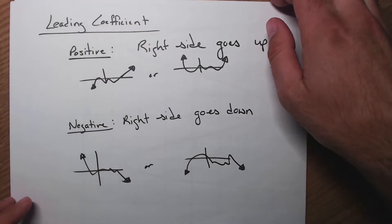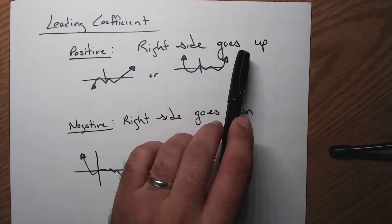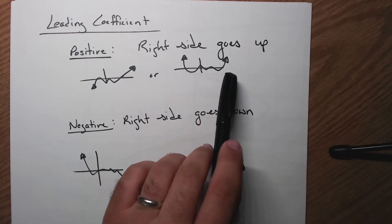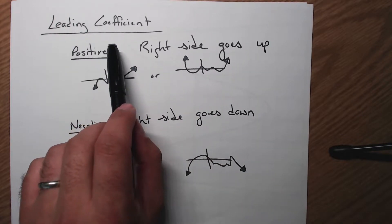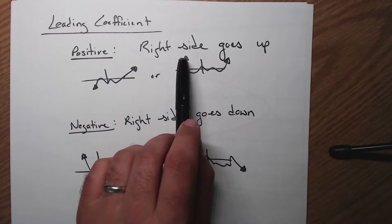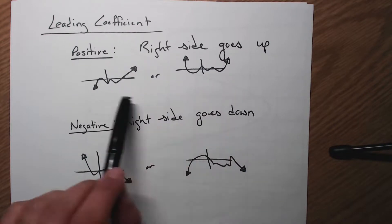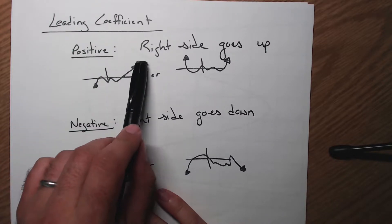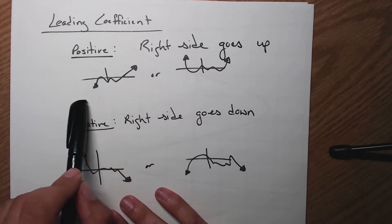The leading coefficient gives more specific direction. If it's a positive number, our right side is going to go up no matter what. If it's an even degree, both go in the same direction, so the left side also goes up — it follows the right. For an odd degree with a positive leading coefficient, the right side goes up but the left side must be going down.